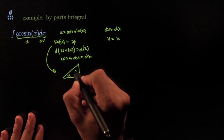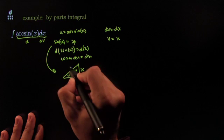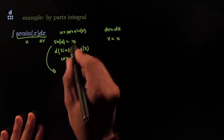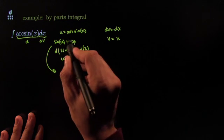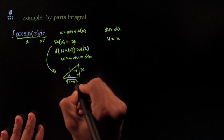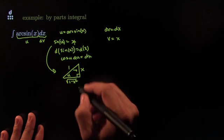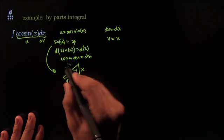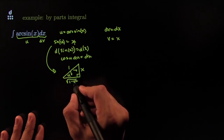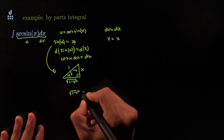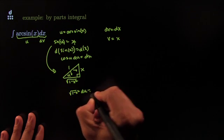The ratio would be x to 1. That would be this ratio, the ratio of opposite to hypotenuse. That forces this one to be 1 minus x squared by using Pythagorean theorem. From here I gather that cosine u would be this ratio. So cosine u would be equal to square root of 1 minus x squared times du is equal to dx.